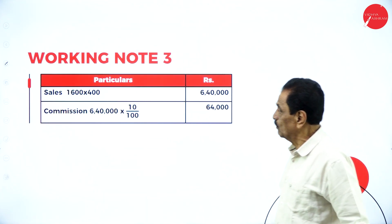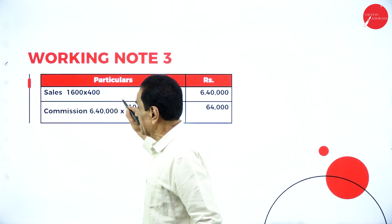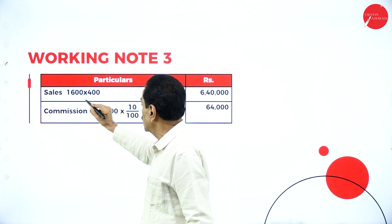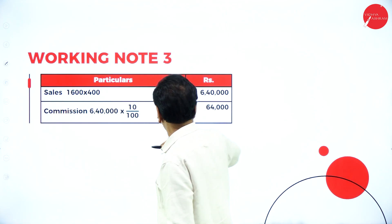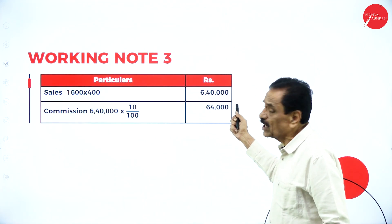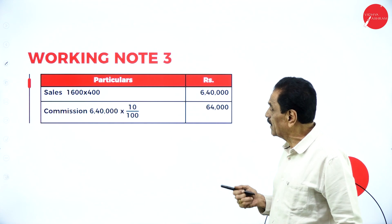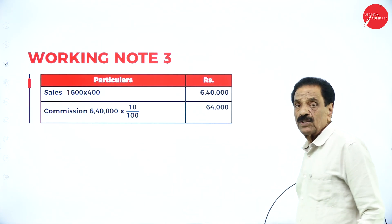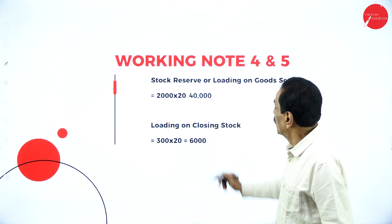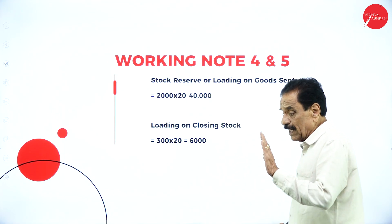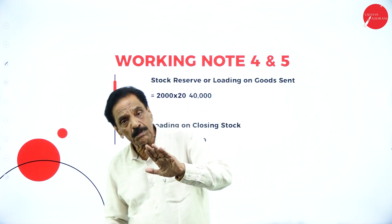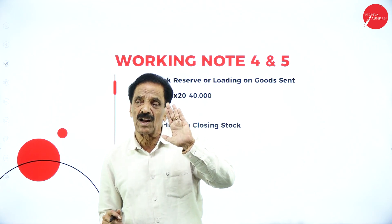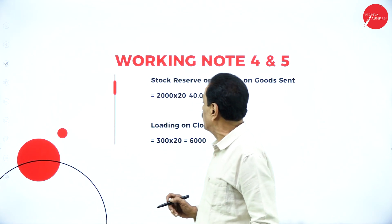Working Note 3: Sales and Commission. How many units were sold? 1,600 vehicles at Rs. 400 each, working out to Rs. 6,40,000. Commission at 10% = Rs. 64,000.